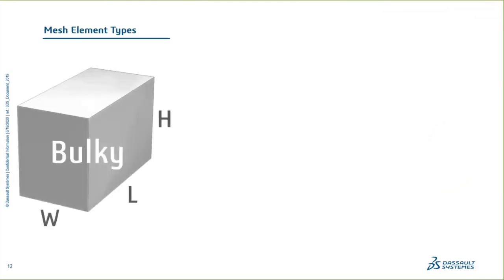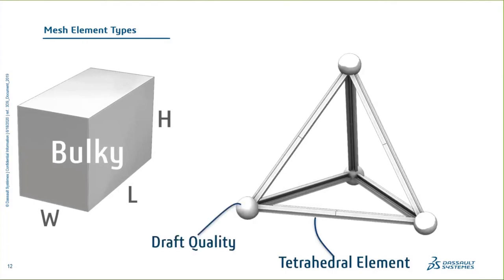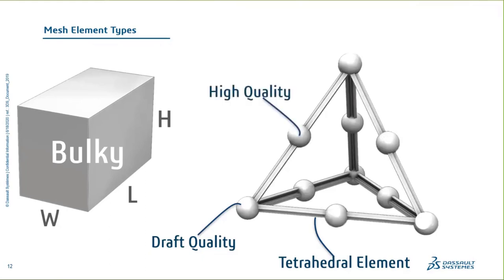With that, let's look at the mesh elements that correspond to each geometry type. For bulky geometry, the element is called a 3D tetrahedral element. It meshes inside that volume where the tetrahedra share edges and nodal points. Nodes are at the corner points — that is where the equations are being solved. There is draft quality with just corner-point nodes, and high quality with mid-side nodes. High quality takes a little longer but gives a better understanding of how that edge is deforming.